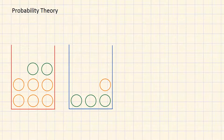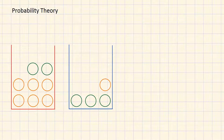Imagine we have two boxes. One of the boxes is red and the other is blue. The red box contains eight fruits in total, consisting of two green apples and six oranges. The blue box contains four fruits in total, consisting of three green apples and one orange. The task is the following: we pick one of the boxes randomly, draw one random fruit out of that box, observe the color of the fruit, and then replace it back into the same box.